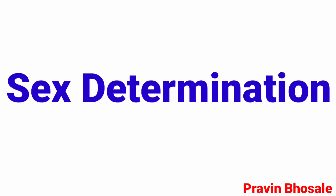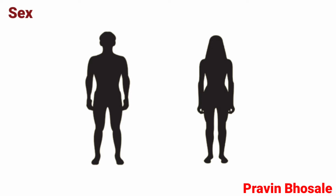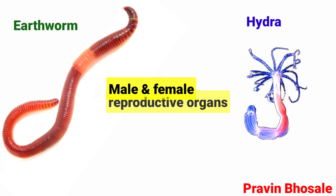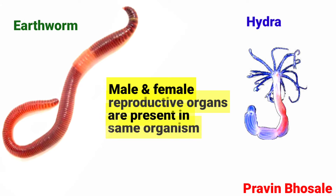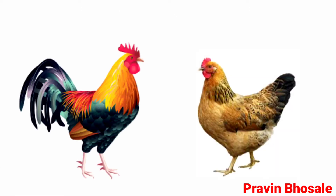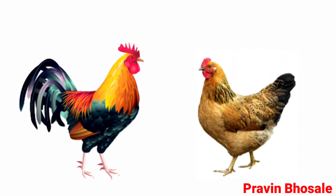Sex determination: the mechanism by which sex is established is termed as sex determination. The term sex refers to sexual phenotype. In some species, both male and female reproductive organs are present in the same organism — described as bisexual, hermaphrodite, or monoecious. On the other hand, some species in which the organism has either male or female reproductive organs are said to be dioecious or unisexual.